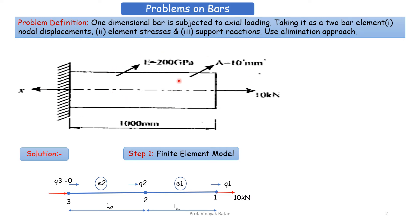As given in the question, we take two bar elements: element 1 and element 2, with nodes 1, 2, and 3. The length of each element is 500 mm. Nodal displacements are denoted q1, q2, and q3. At node 1, the 10 kN force is applied; node 3 is fixed, so there is a reaction at node 3. This is your Step 1: FE model.